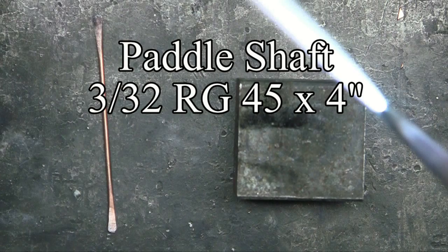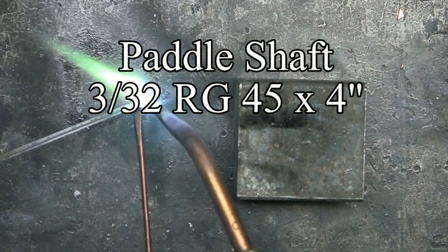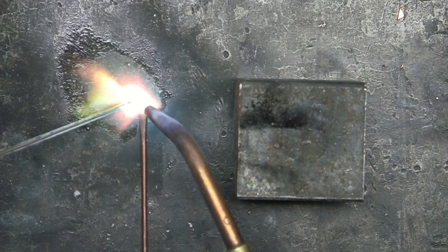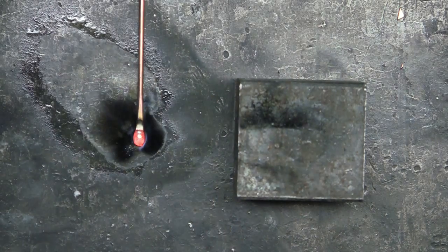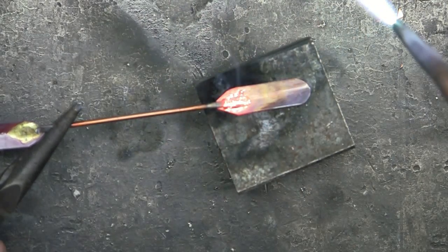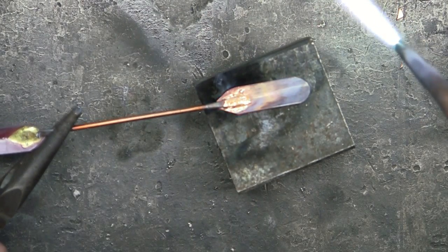For the paddle handle, a piece of 3/32nd RG45, and as you can see I've flattened it on each end where it will be braised to the paddle blades. Braising the handle onto the paddle blade.